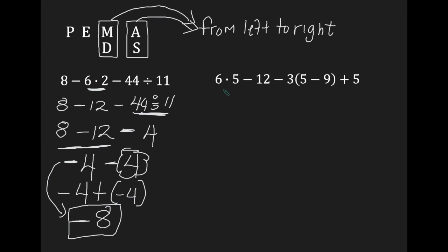Let's try another problem. I have 6 times 5, take away 12, take away 3, then we have parentheses with 5 minus 9 inside, and then I'm adding 5. Do we have parentheses? Yes, right here. 5 take away 9 gives me a value of negative 4.